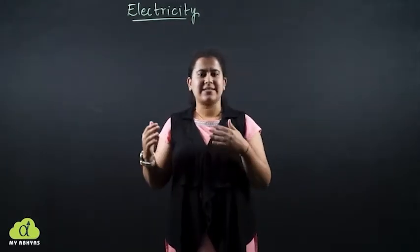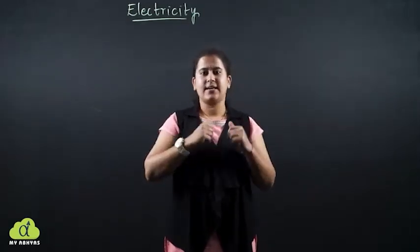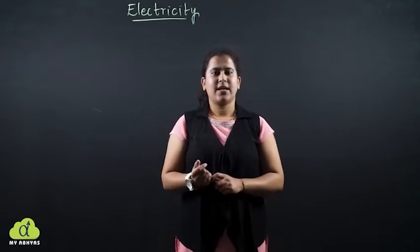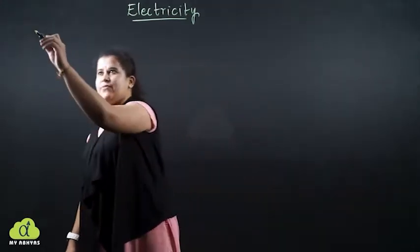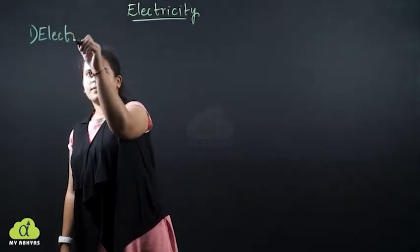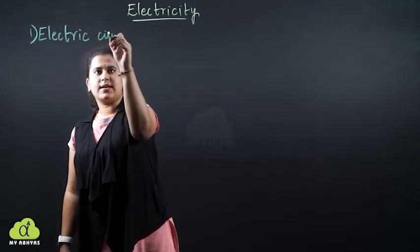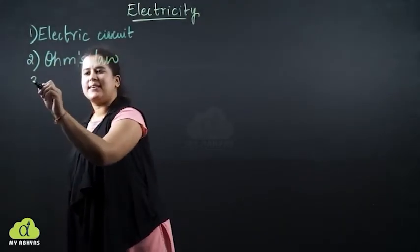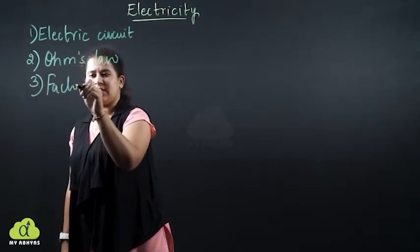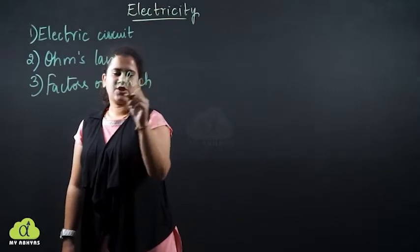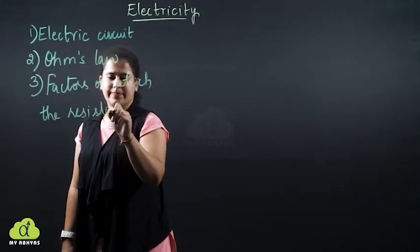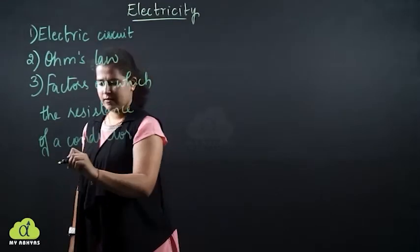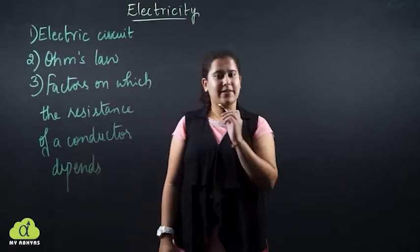Yesterday we studied about electric potential and electric charge. Now we will apply it in our daily life — how is it useful? Today we have mostly three main things to study: the first one is the electric circuit, the second one is Ohm's law, and the third one is the factors on which the resistance of a conductor depends.